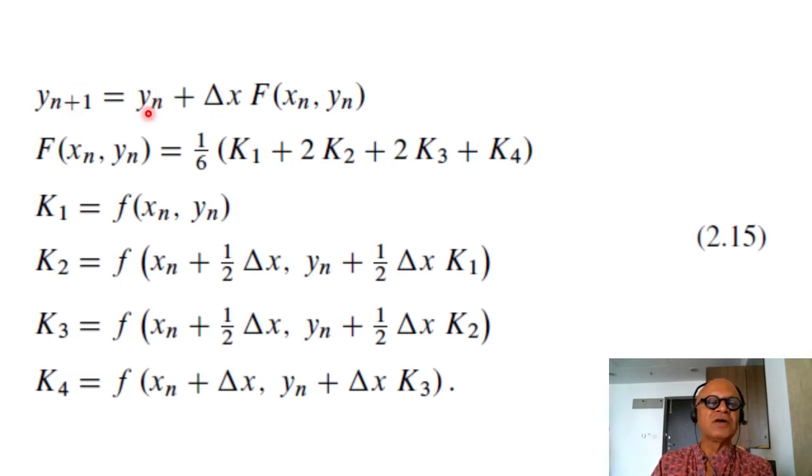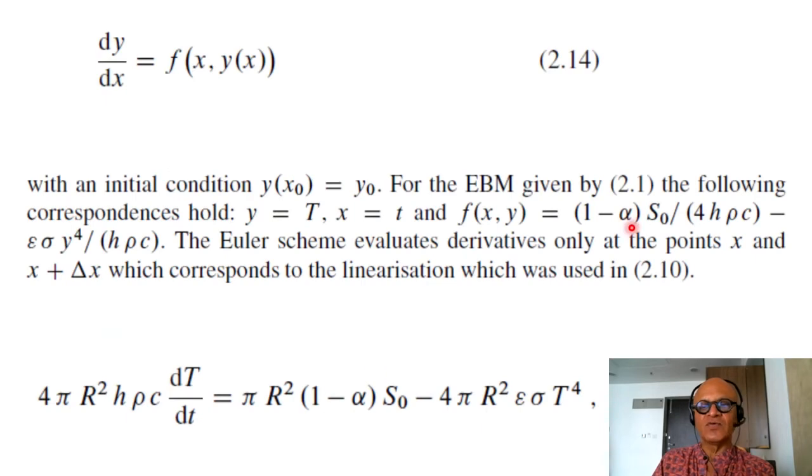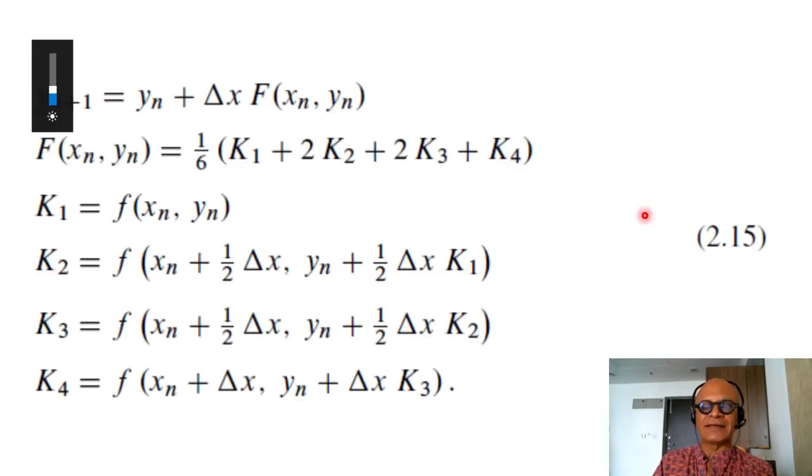So T_n+1 as a function of T_n plus delta t times the function f which is this one evaluated at that time.